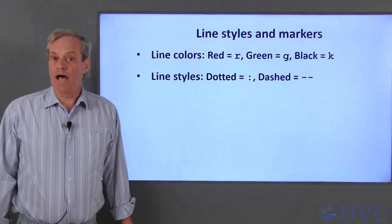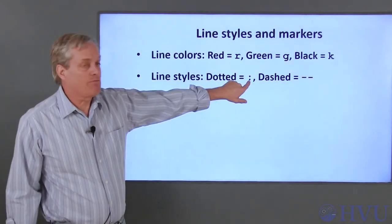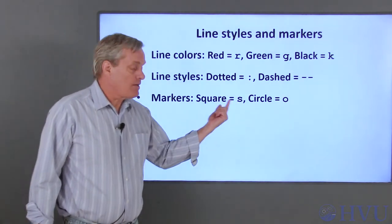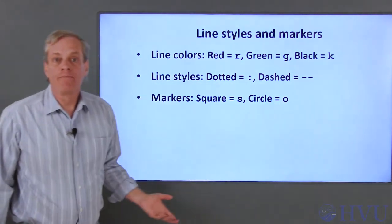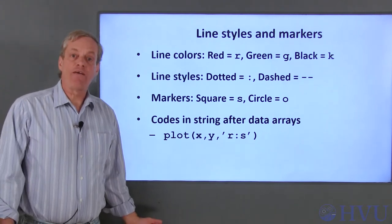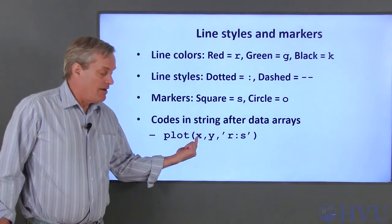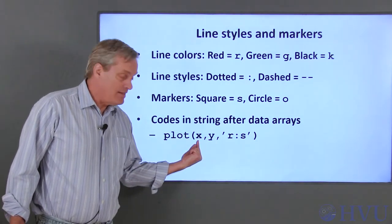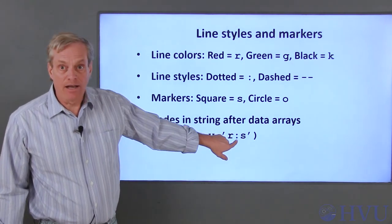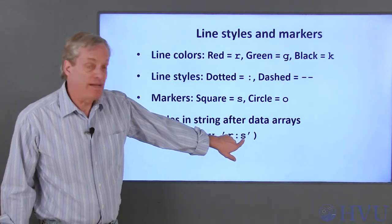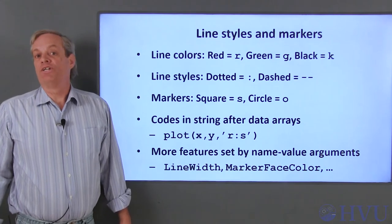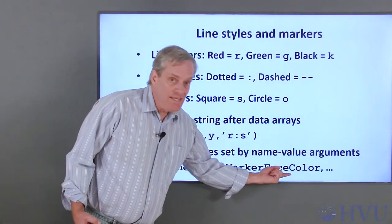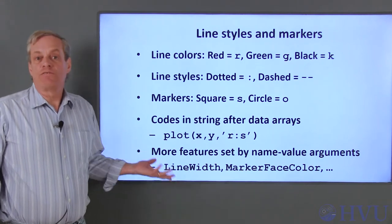Lines can be solid, dashed, dotted, or a dot-dash combination. A dotted line is specified by a colon and a dashed line by two hyphens. Data point markers are specified by a symbol — for example, 'S' for a square and lowercase 'o' for a circle. The codes to specify markers and line styles are included in a string following the data set being plotted. For example, plot(x, y, 'r:s') plots the data connected by a red dotted line with square markers. Additional styles can be set using name-value arguments such as LineWidth and MarkerFaceColor.